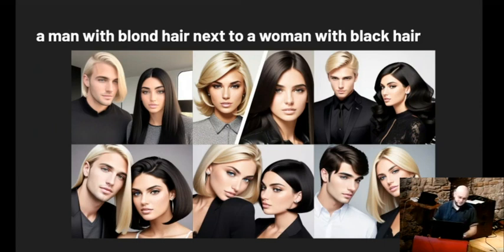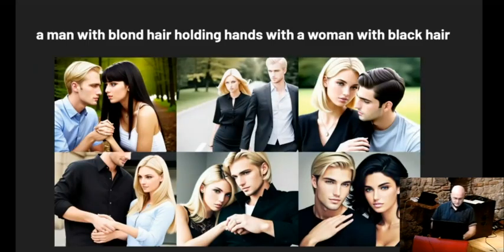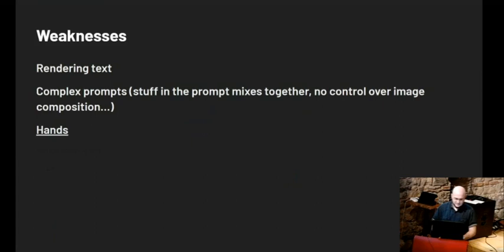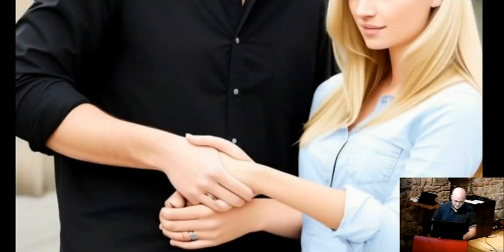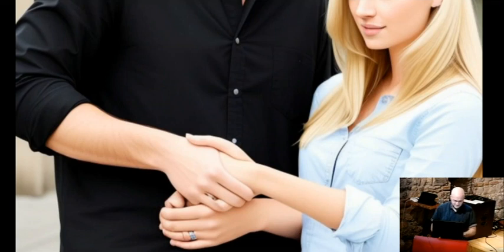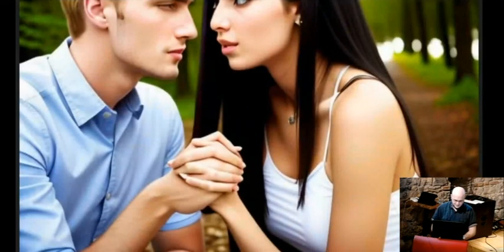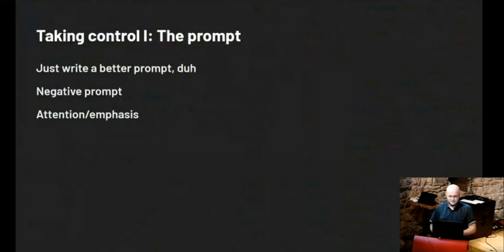Let's try making it more complex — we'll make them hold hands as well. Two out of six got the hair color right. Three out of six have visible hand-holding, but if you look closely the hands are not great. There's something very wrong — extra fingers, a mysterious third person's hand. The fingers — oh my god, this is horrible. So let's see what we can do to take control of this chaos.